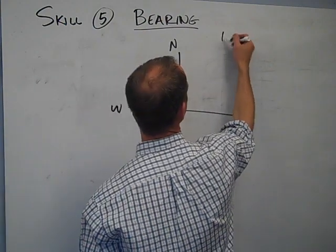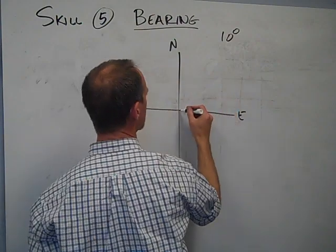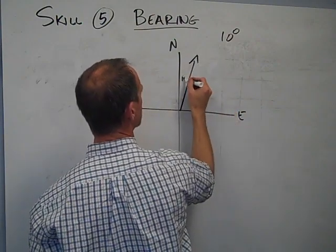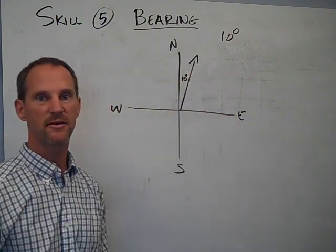For instance, if we're heading at a bearing of 10 degrees, that just means that we are aiming about like this, where that's 10 degrees.